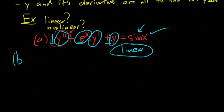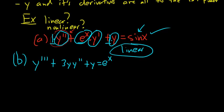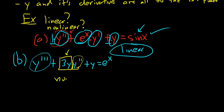Example B: y''' + 3y · y'' + y = e^x. The order is 3. This one is non-linear because of the term 3y · y'' — that's a function of Y being multiplied by the second derivative. You have to have only pure functions of x in front of Y and its derivatives. So the answer is non-linear.